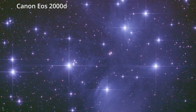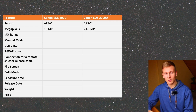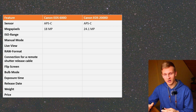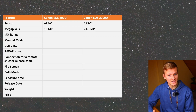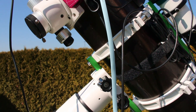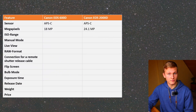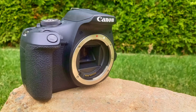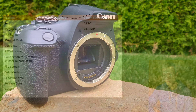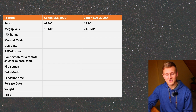Both cameras have an APS-C sensor, but the 2000D's higher megapixel count means its pixel size is smaller. Larger pixels are better for low-light photography, and in astrophotography we are capturing very dark objects, so low-light performance is very important. The Canon EOS 600D has larger pixels, which is an advantage. However, the 2000D is newer with better sensor technology, making it difficult to say which performs better in low light. From my personal experience, the Canon EOS 2000D has less noise.